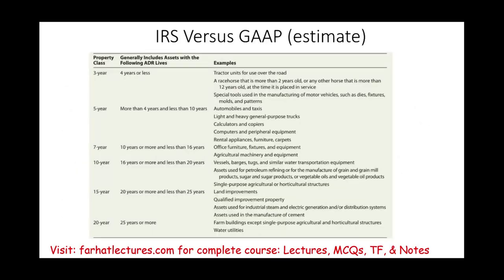A main difference between tax cost recovery and GAAP depreciation is how we arrive at the amount. For GAAP, we estimate the asset's life and salvage value. For tax purposes, the IRS — through the Modified Accelerated Cost Recovery System — dictates the recovery period. You cannot choose your own estimate. For personal property, there are six asset classes: 3-year, 5-year, 7-year, 10-year, 15-year, and 20-year.